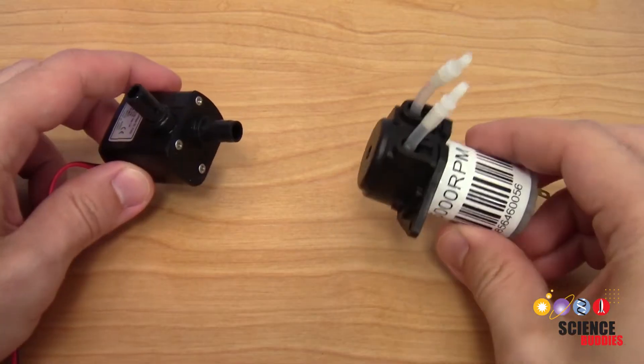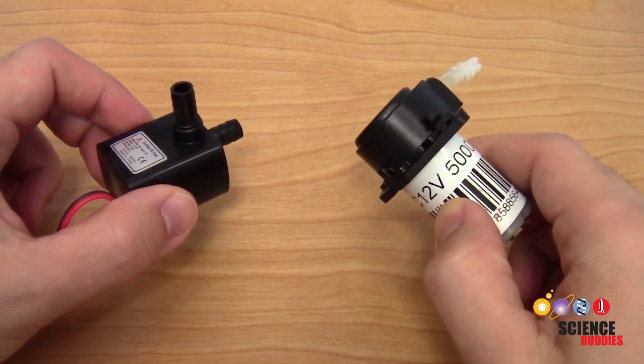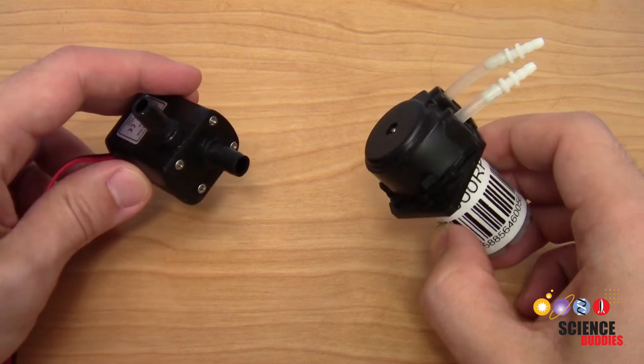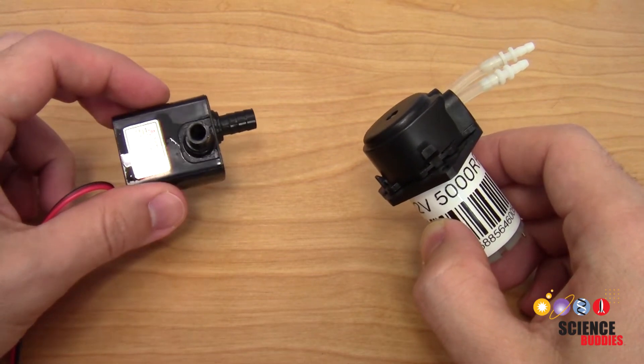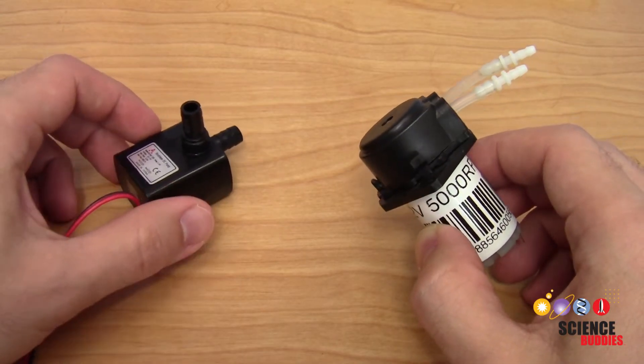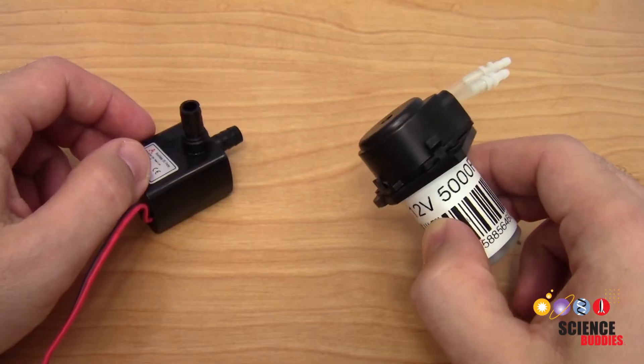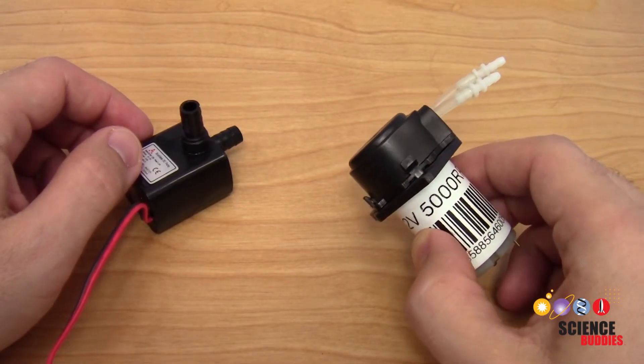First you will need a small pump. These are available online at hardware stores and aquarium supply stores. There are many different kinds available, and you might see descriptions like peristaltic pump or diaphragm pump. Don't worry too much about exactly what type you need to buy. The project is pretty flexible and will work with different types of pumps, as long as you can adjust their flow rate, which we'll talk about later.